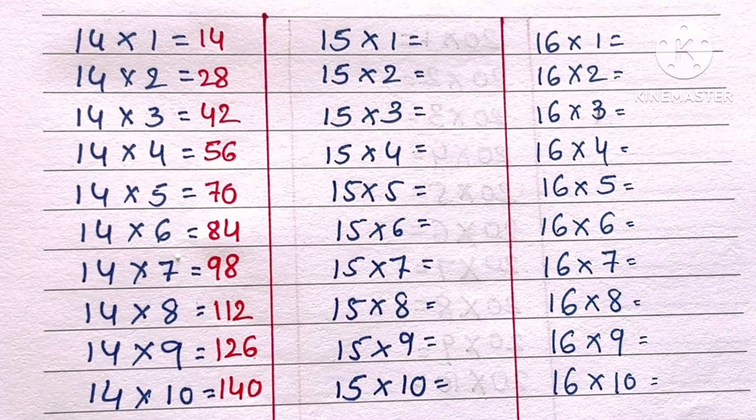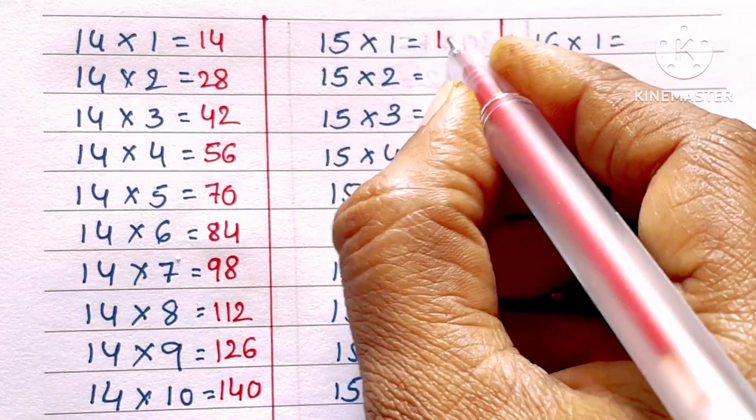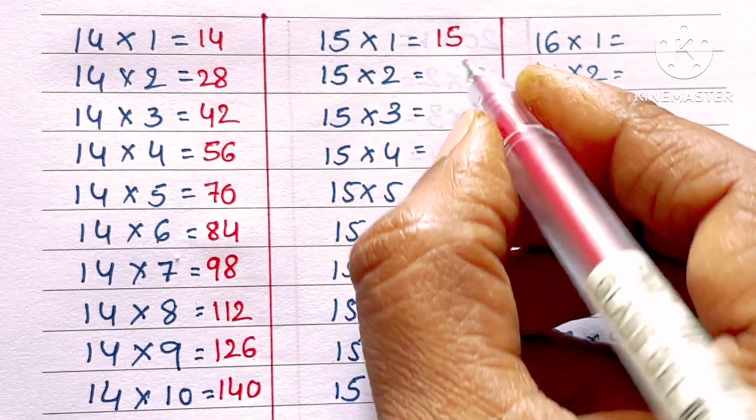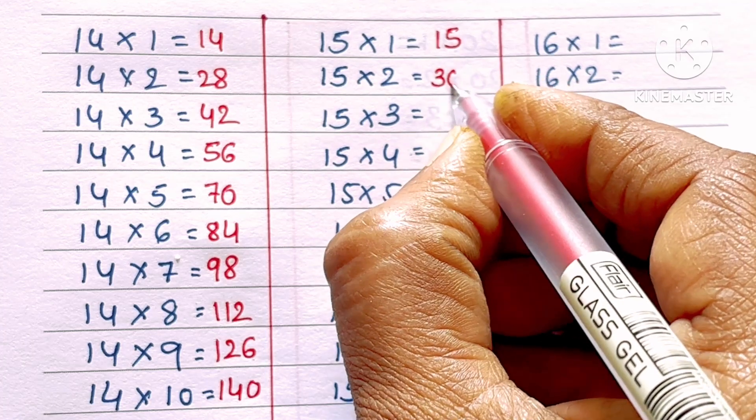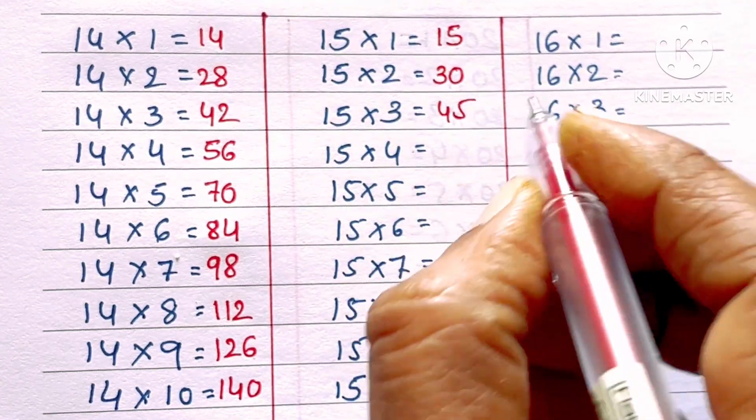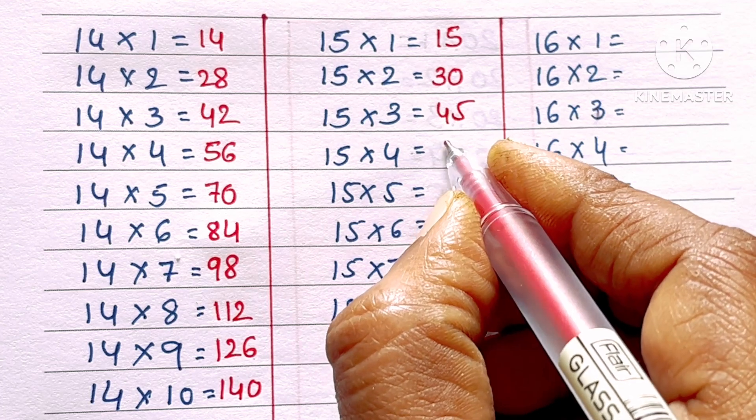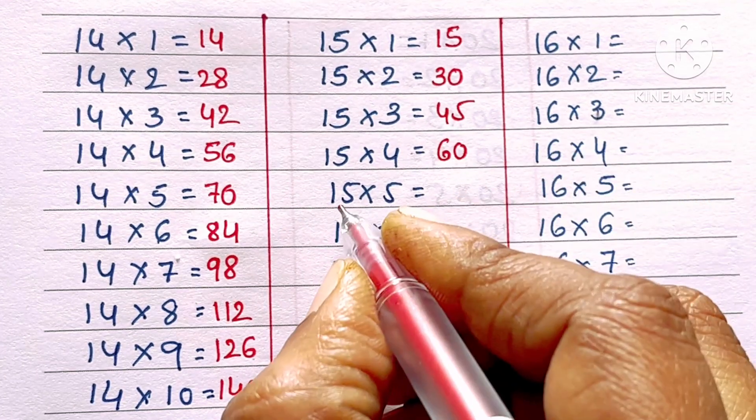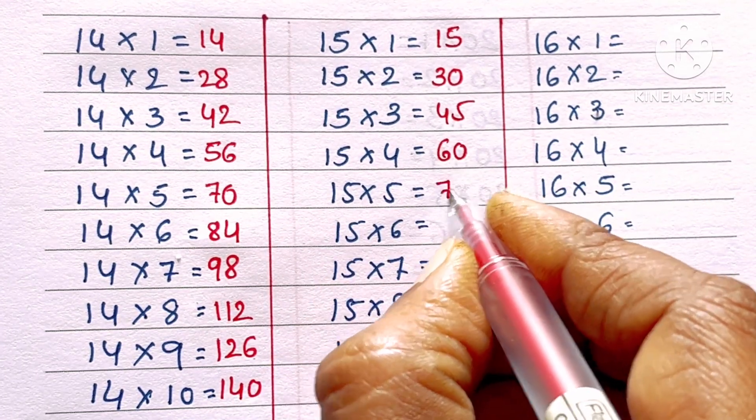15 ones are 15, 15 twos are 30, 15 threes are 45, 15 fours are 60, 15 fives are 75.